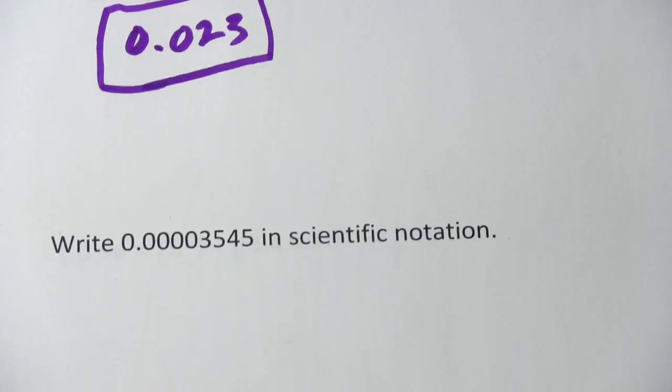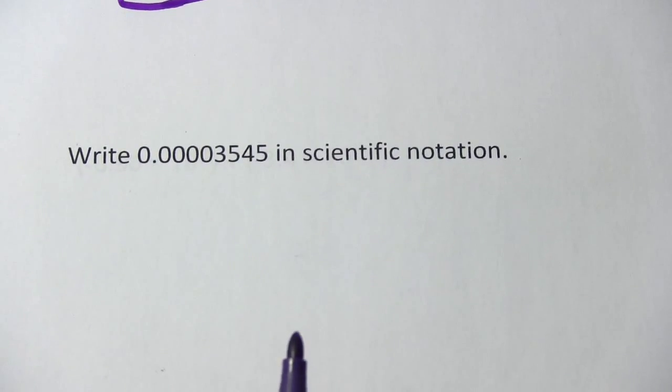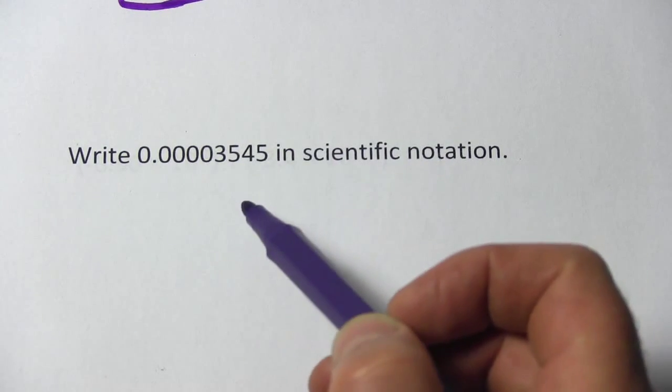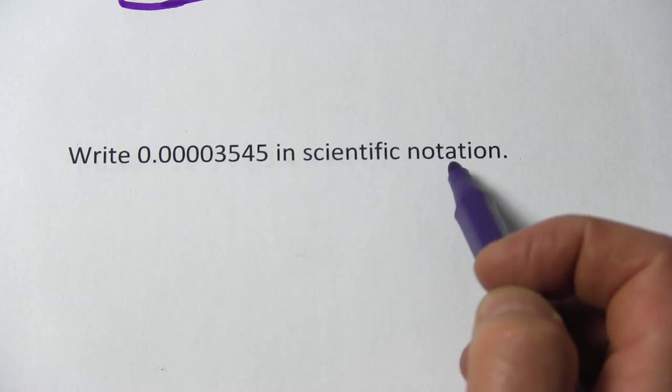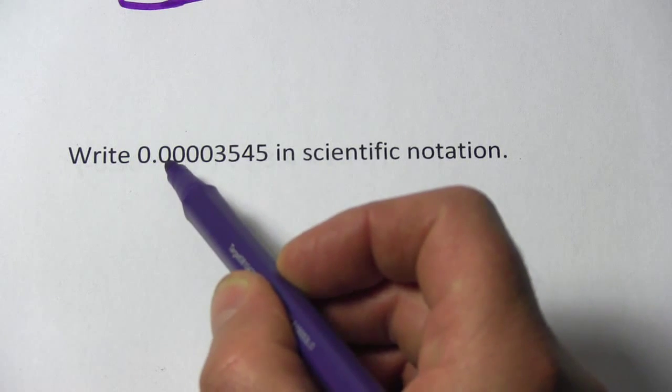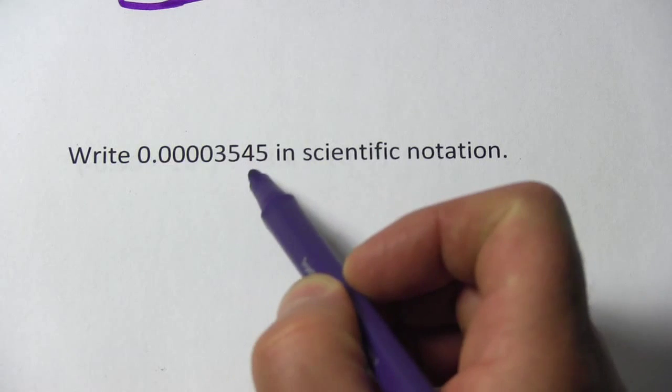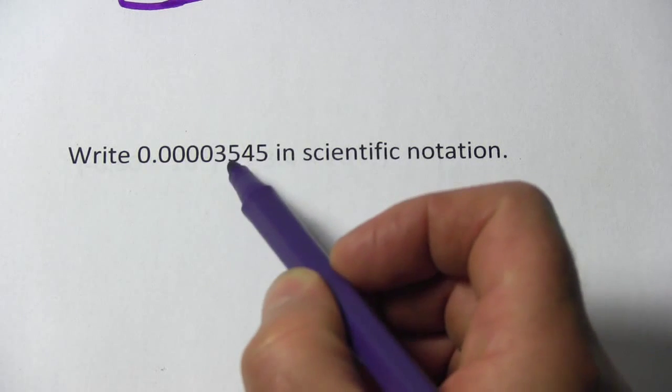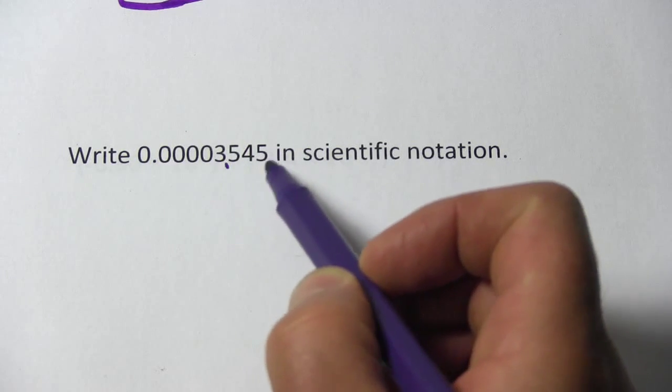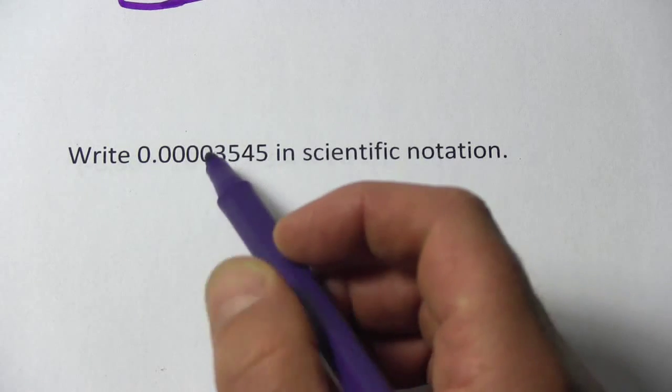Let's try this problem where we have to go the opposite direction. So here we have a number in standard notation and we want to write it in scientific notation. We're going to move the decimal point until we get a number between 1 and 10. So in this case, it's going to be 3.545. We want our decimal point to end up there.